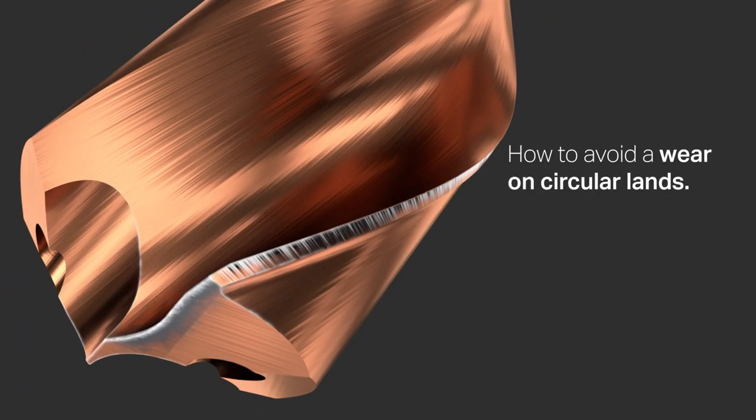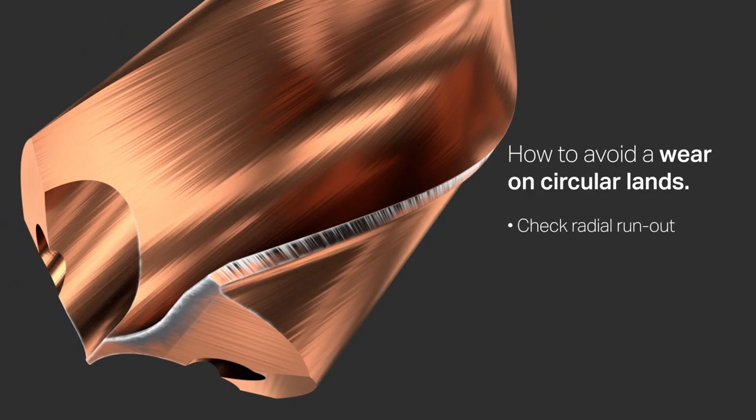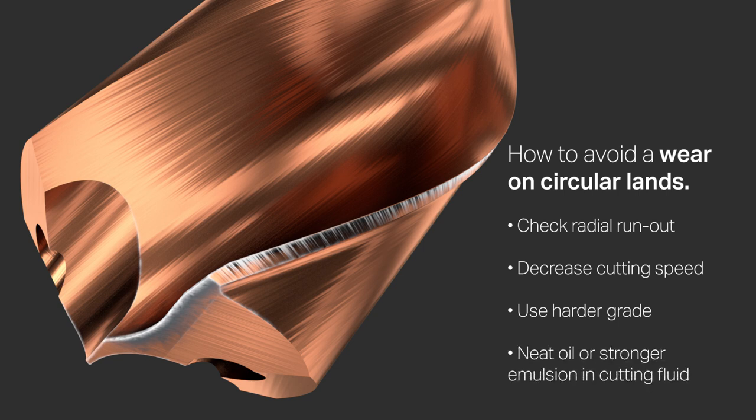Wear on circular lands can be prevented by checking the radial run-out, decreasing the cutting speed, or changing to a harder grade. In some cases, it may be necessary to strengthen the cutting fluid with neat oil or stronger emulsion.